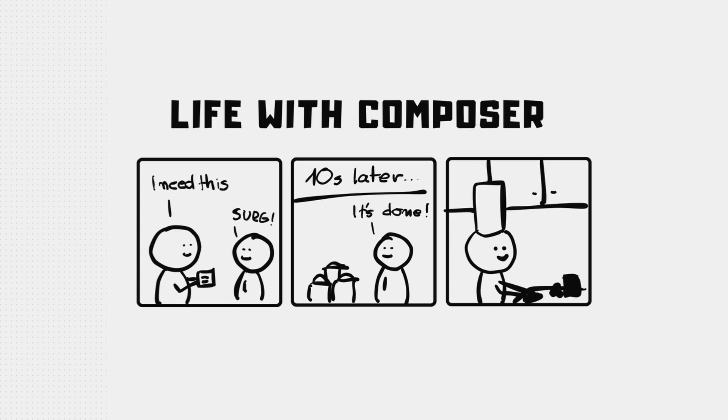Composer acts as your personal assistant. You provide a list of ingredients you need — a list of dependencies in the shopping list stored in composer.json. This tool takes this list, goes to the official supermarket called Packagist, fetches the required ingredients, checks their compatibility, and brings them back to your kitchen — your codebase. It's like having someone else prepare all the required ingredients for you so you can focus on what truly matters: development, or baking.